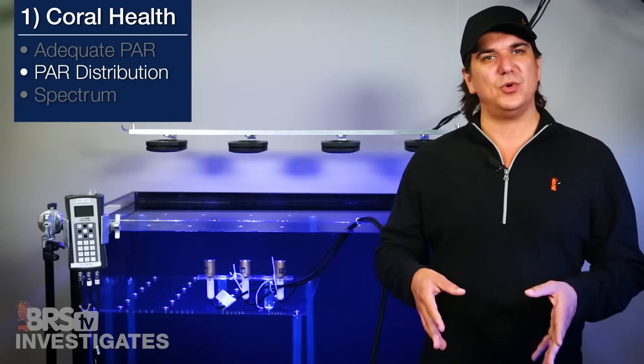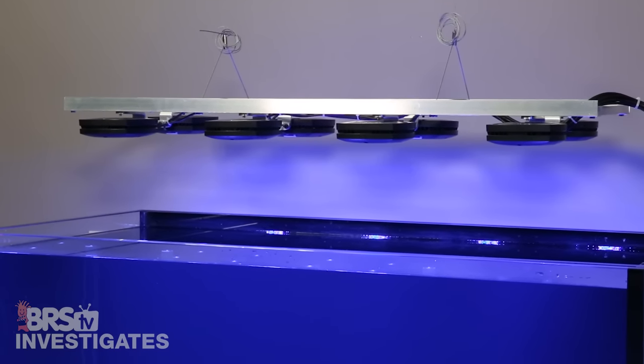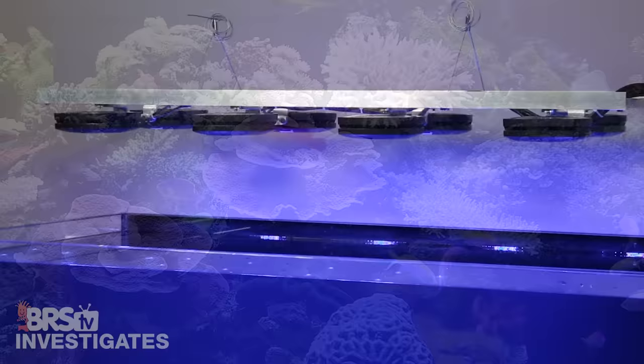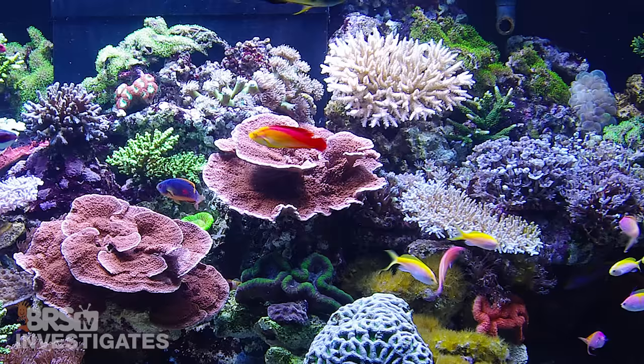This installation will almost certainly provide better results as well. Again these eight independent modules allow for adjustments in zoning. It is very possible that the back of the tank where the rockwork is positioning the corals high you might want to create a zone with the modules turned down to achieve that 250 to 350 in the top half of the tank.